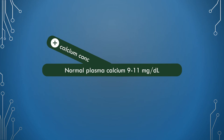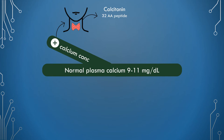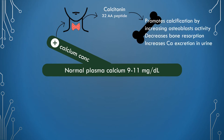When there is an increase in plasma calcium concentration, it triggers the thyroid gland to release calcitonin. Calcitonin is a peptide containing 32 amino acids and is secreted by parafollicular cells of the thyroid gland. Calcitonin promotes calcification by increasing osteoblast activity, decreases bone resorption, and increases calcium excretion in urine. By these three mechanisms, the increased calcium concentration is reversed toward normal.